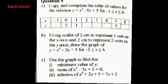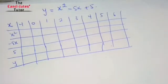This is a CSE 2016 question. We have to copy and complete a table for values of y equals x squared minus 5x plus 5, for the interval where x is greater than or equal to negative 1 and less than or equal to 6. We are going to complete the table and then draw it. The first question asks us to copy and complete the table of values.